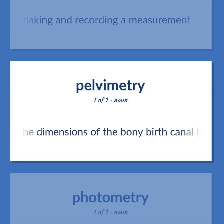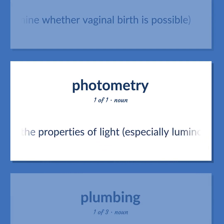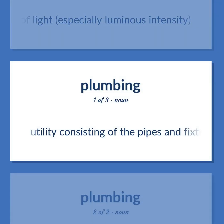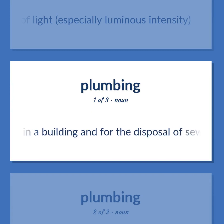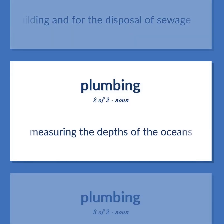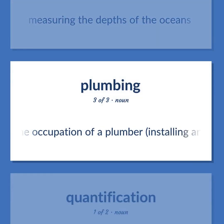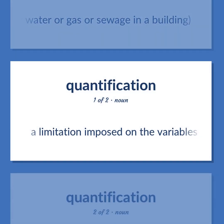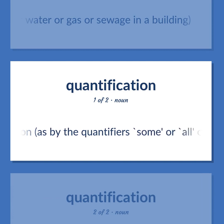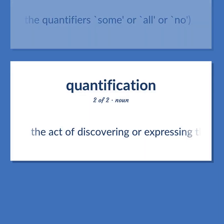Pelvimetry: measurement of the dimensions of the bony birth canal to determine whether vaginal birth is possible. Photometry: measurement of the properties of light, especially luminous intensity. Plumbing: utility consisting of the pipes and fixtures for the distribution of water or gas in a building and for the disposal of sewage. Also: the occupation of a plumber — installing and repairing pipes and fixtures for water, gas, or sewage in a building. Quantification: a limitation imposed on the variables of a proposition, as by the quantifiers some, all, or no. Also: the act of discovering or expressing the quantity of something.